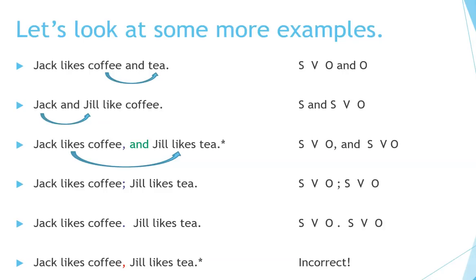The last one is actually incorrect: Jack likes coffee, Jill likes tea. It's incorrect because it can be confusing. The comma implies there's a connection, but there's no connecting word, so it seems like there's more of a separation — that's confusing to people. You can fix it by putting a period: Jack likes coffee. Jill likes tea. Or by adding a connecting word: Jack likes coffee, and Jill likes tea.